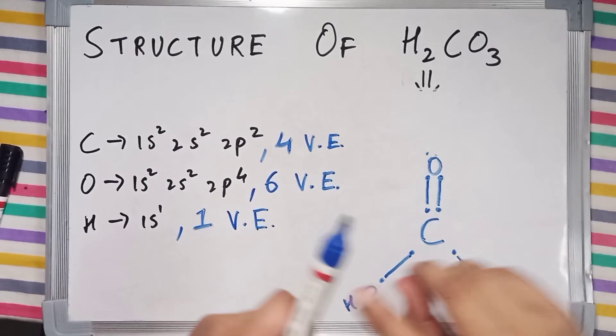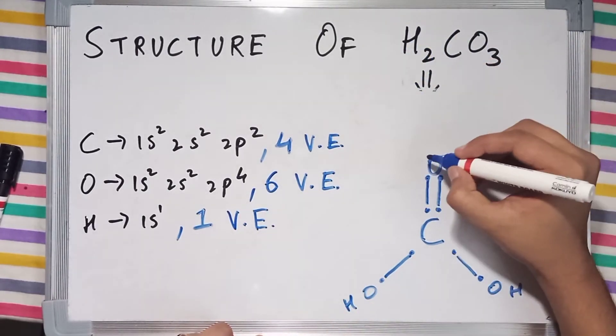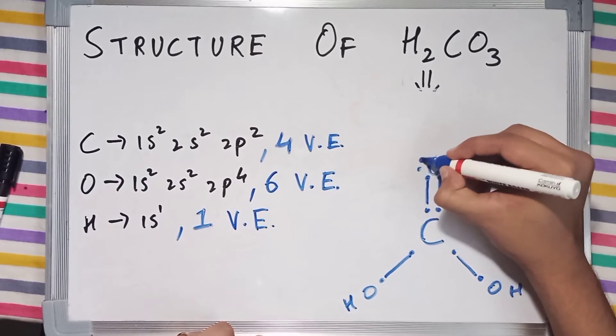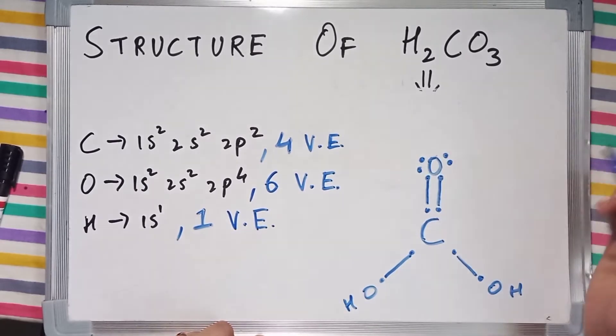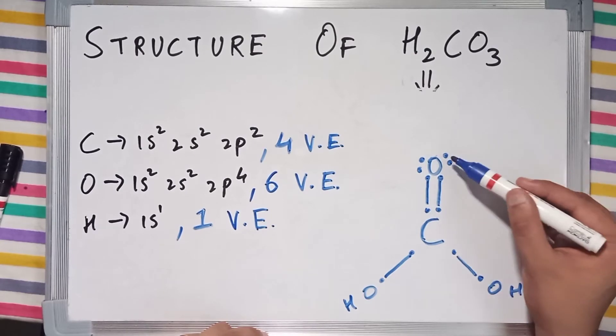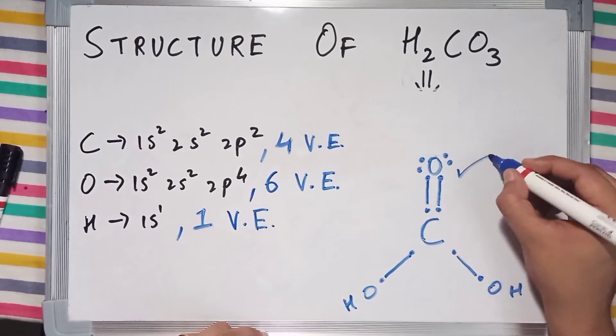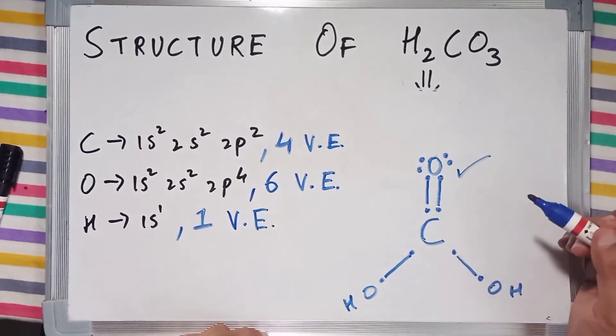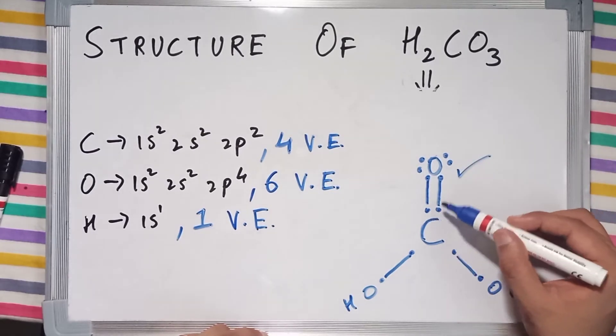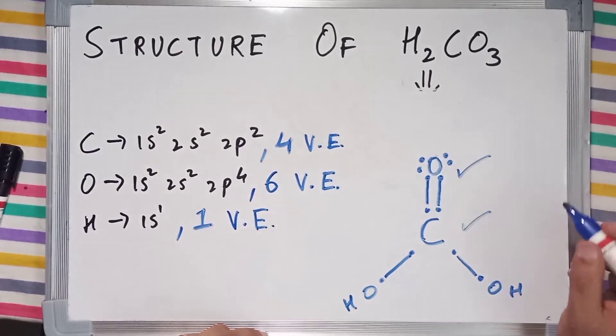Now let's check for the valences. Oxygen has 6 valence electrons and has donated 2 electrons for the bond making process. So now it has completed its octet. Let's check for carbon - it has also completed its octet.